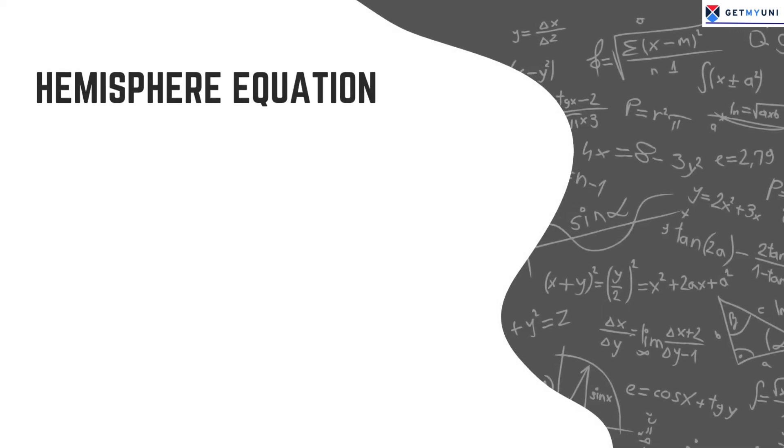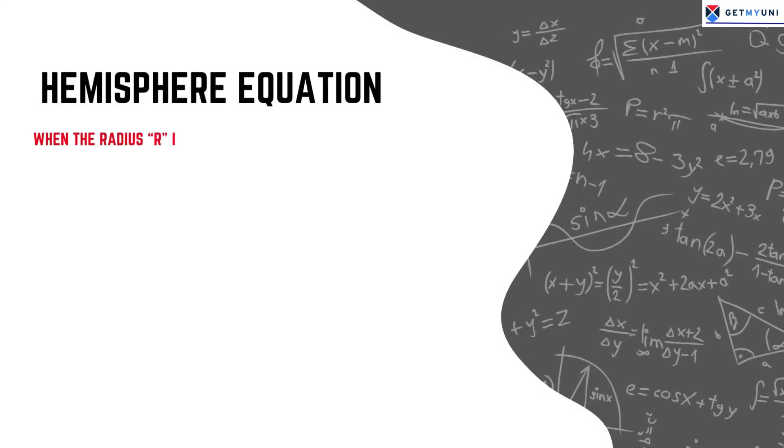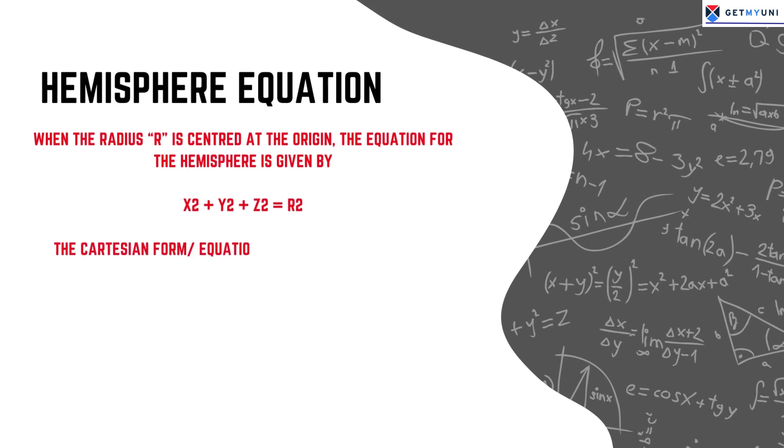Lastly, let us discuss the hemisphere equation. When the radius r is centered at the origin, the equation for the hemisphere is given by x2 plus y2 plus z2 equals r2. The Cartesian form equation of a hemisphere with the radius r